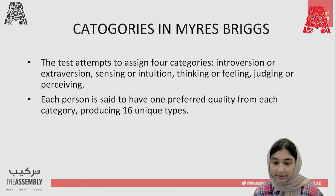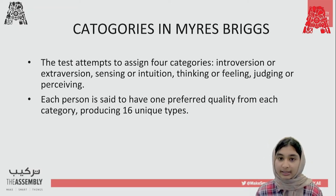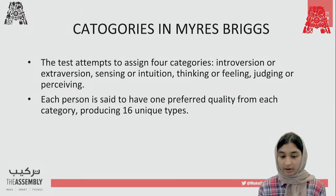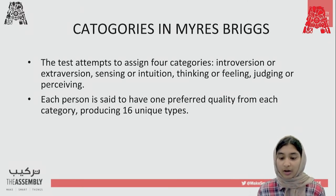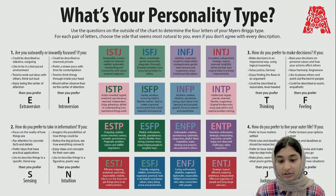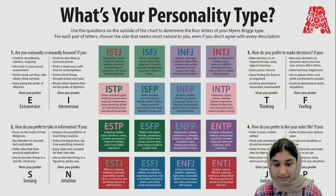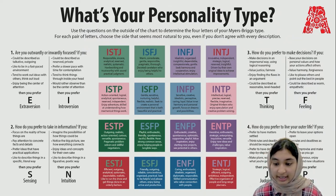Next, we have the categories in Myers-Briggs. This test attempts to assign four categories: introversion or extroversion, sensing or intuition, thinking or feeling, and judging or perceiving. Each person is said to have one preferred quality from each of these four categories, which produces 16 unique types of personalities. In each of these, we take the first letter of each — so if it's ISTJ, that means introversion, sensing, thinking, and judging. That is the personality type of that person.